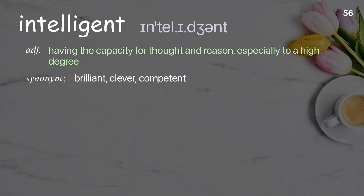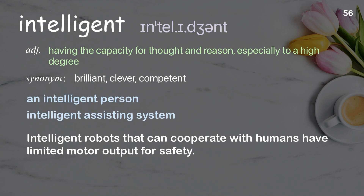Intelligent: having the capacity for thought and reason, especially to a high degree. Examples: an intelligent person; intelligent assisting system. Intelligent robots that can cooperate with humans have limited motor output for safety.